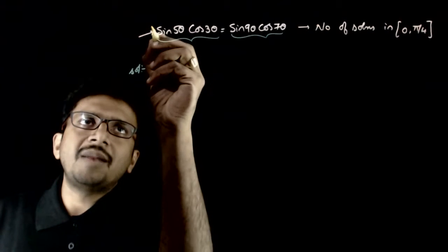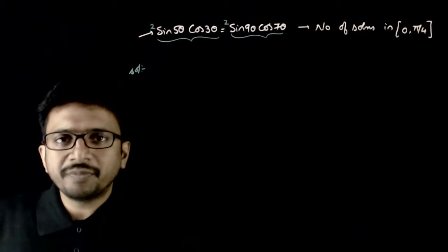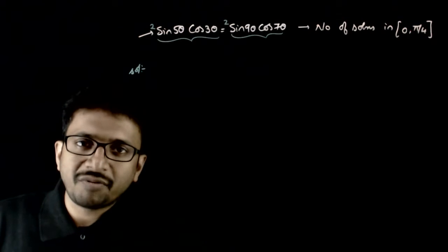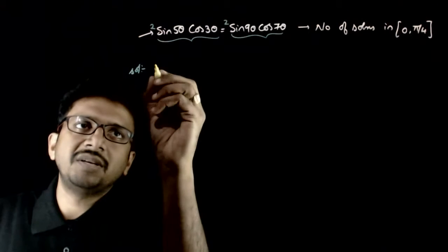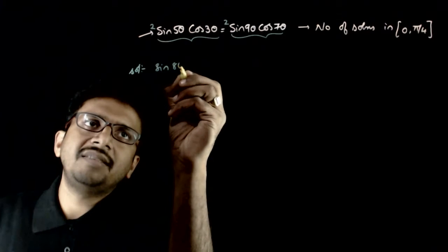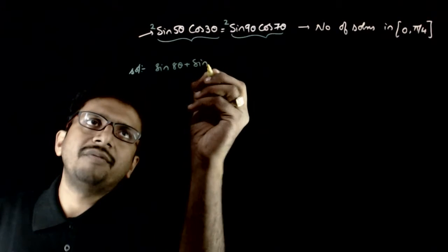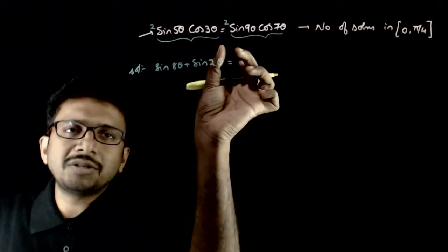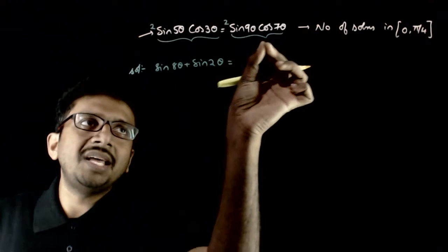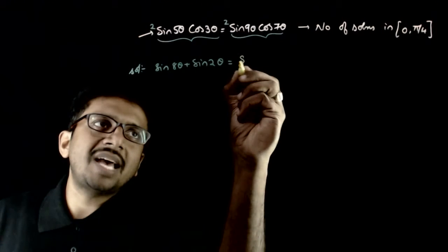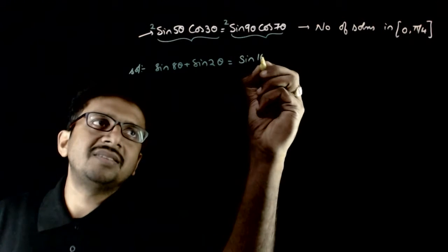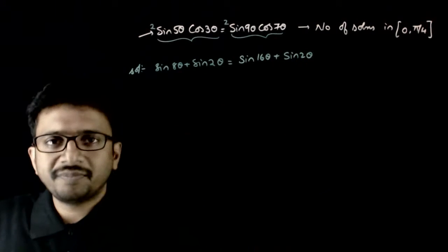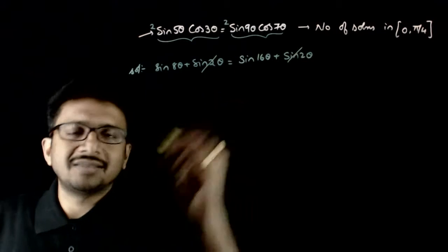First, I will multiply both sides by 2. So this becomes 2sinA·cosB = sin(A+B) + sin(A-B). That gives sin8θ + sin2θ on the left side, and on the right side you also have 2sin·cos, giving sin16θ + sin2θ. So sin2θ cancels on both sides.